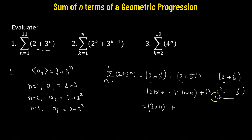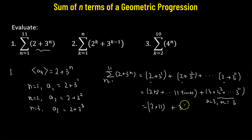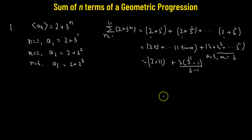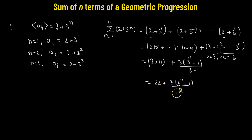The second part is a geometric series where the first term is 3 and the common ratio is 3 squared over 3, which is also 3. So the sum equals 3 multiplied by 3 raised to the power of 11 minus 1, divided by 3 minus 1. This gives us 22 plus 3 times (3 raised to the power of 11 minus 1) divided by 2, which is the required sum of the series.